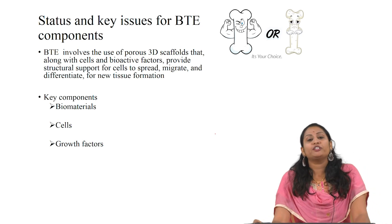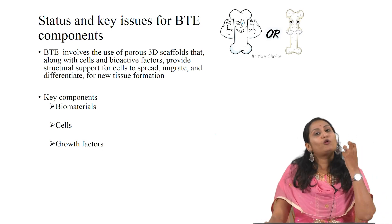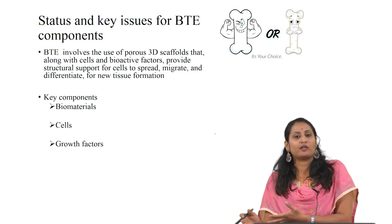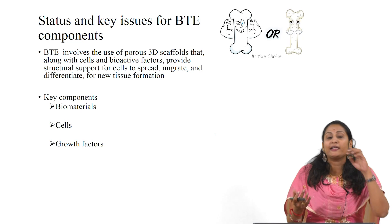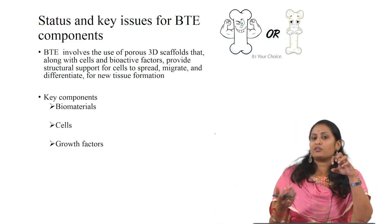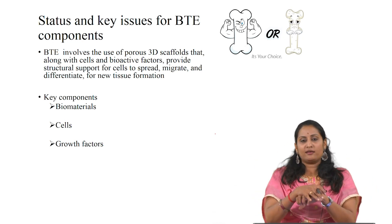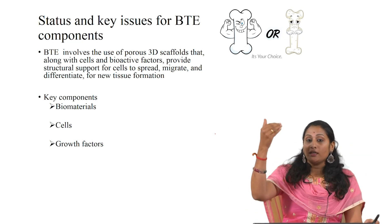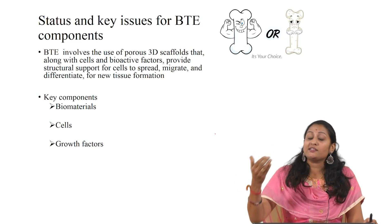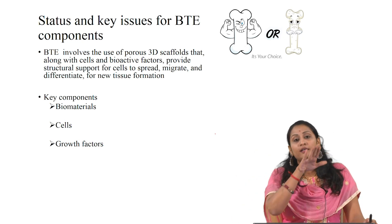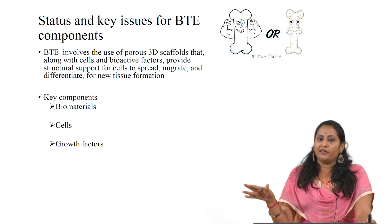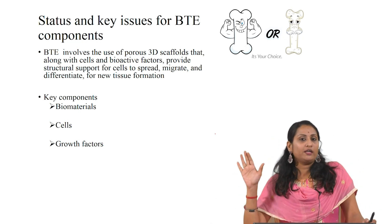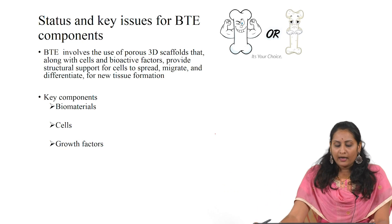Bone tissue engineering involves the use of porous 3D scaffolds. The 3D scaffold mimics the extracellular matrix — it acts as a structural template for cells to enter, adhere, proliferate and differentiate, thereby enhancing the formation of new tissue. It has to degrade, so it should be biodegradable and it is a temporary implant — it cannot be a permanent implant.